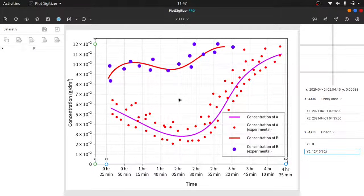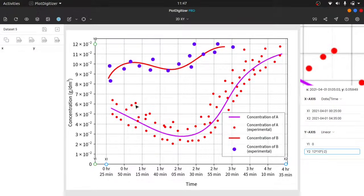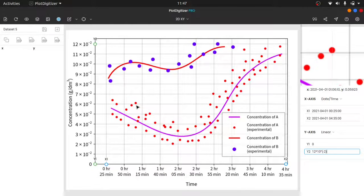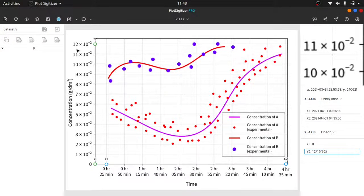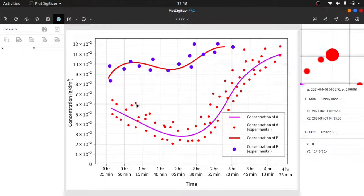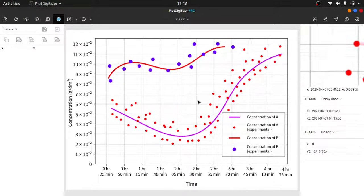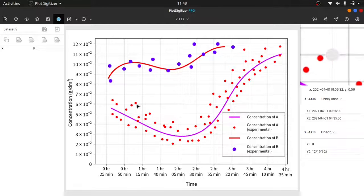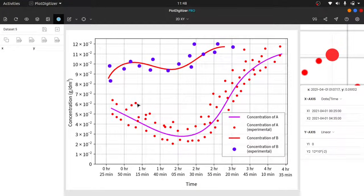The first step in automatic extraction is picking the color. You have to pick the color of the object that you want to extract. In this graph, I first wish to extract red colored scattered points. Pick the color of the points using the color picker from the menu bar. Use the zoom panel while color picking. Otherwise, you might end up picking the wrong shade of color, and in that case, the autotracing might not work as expected.